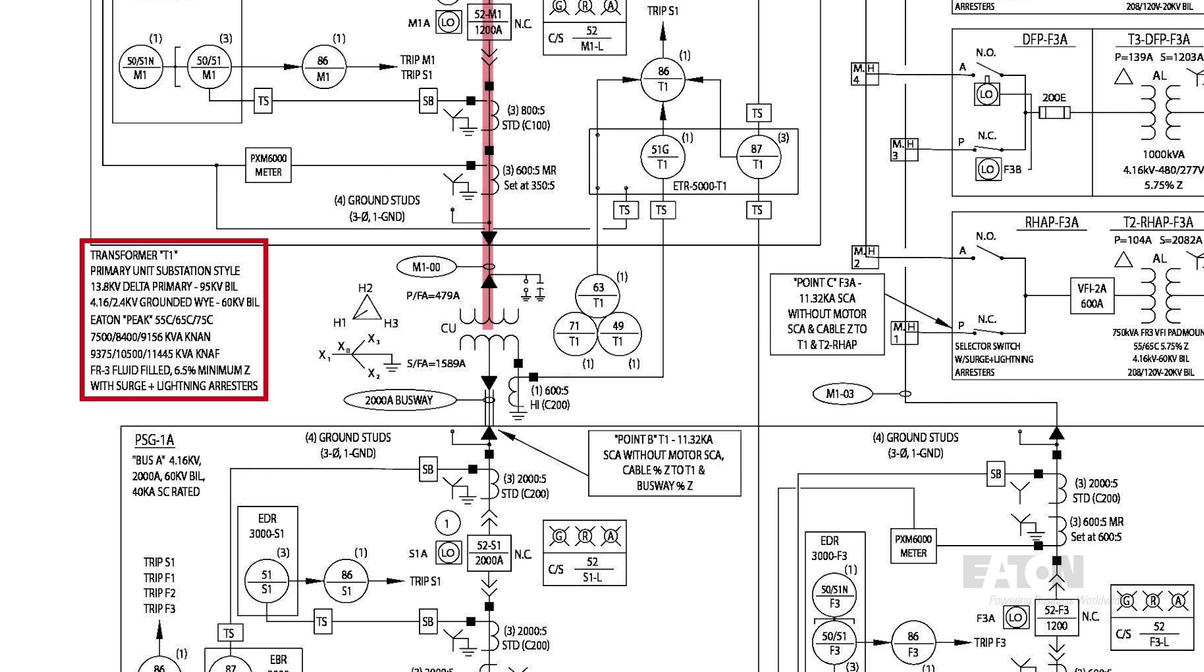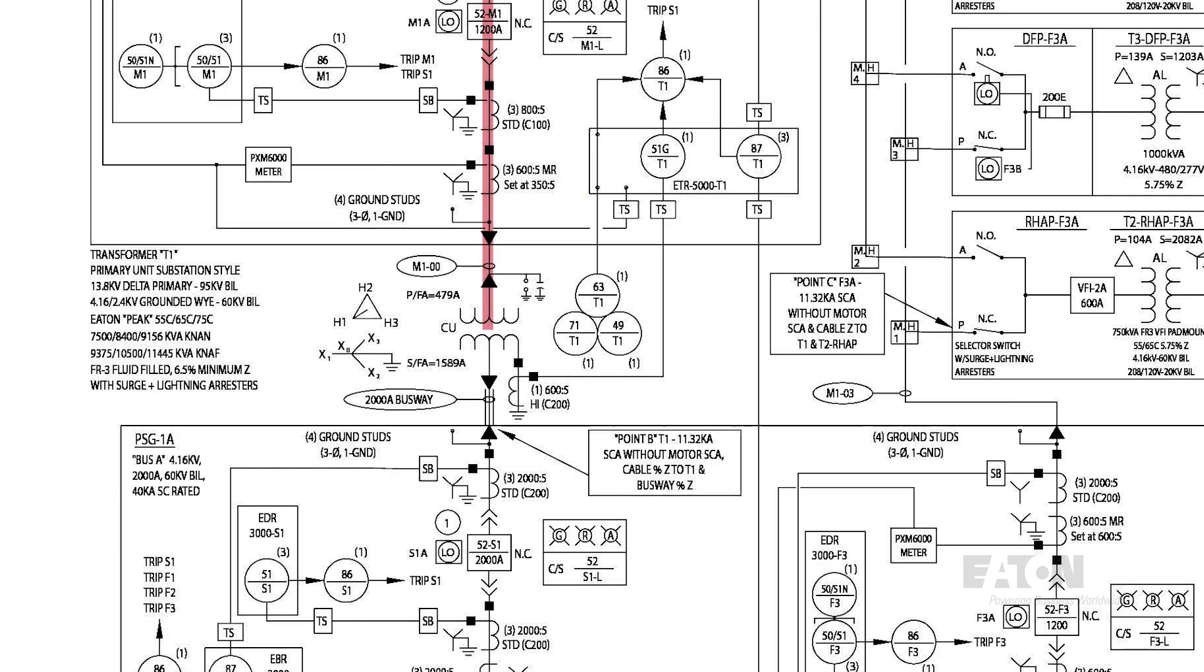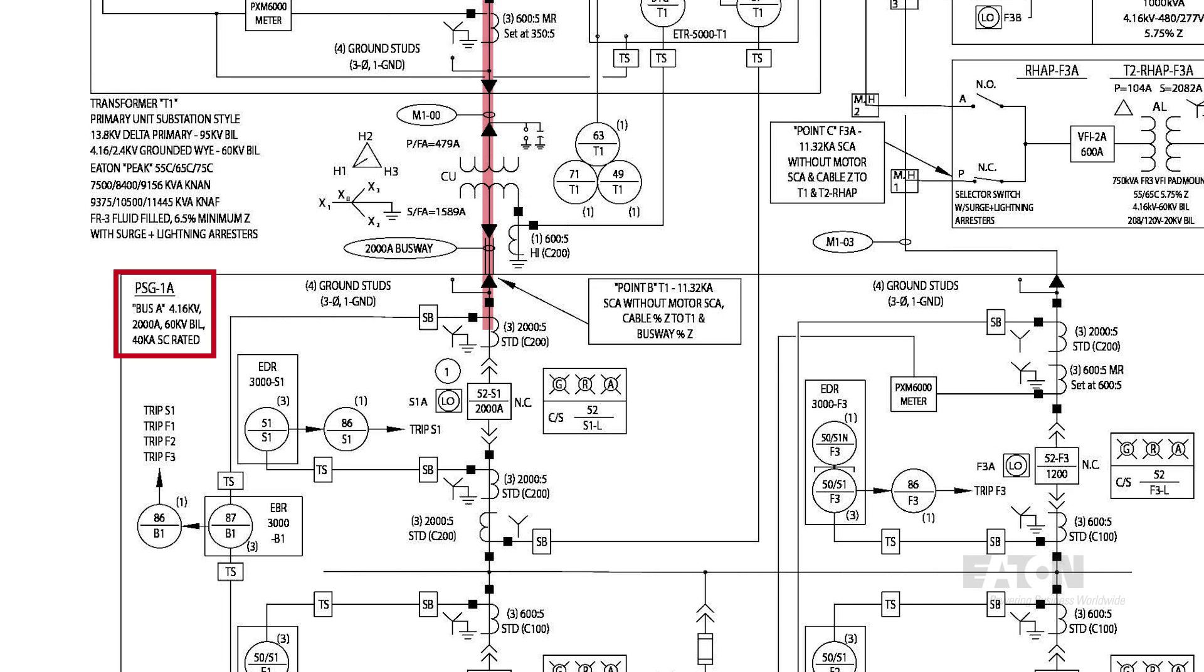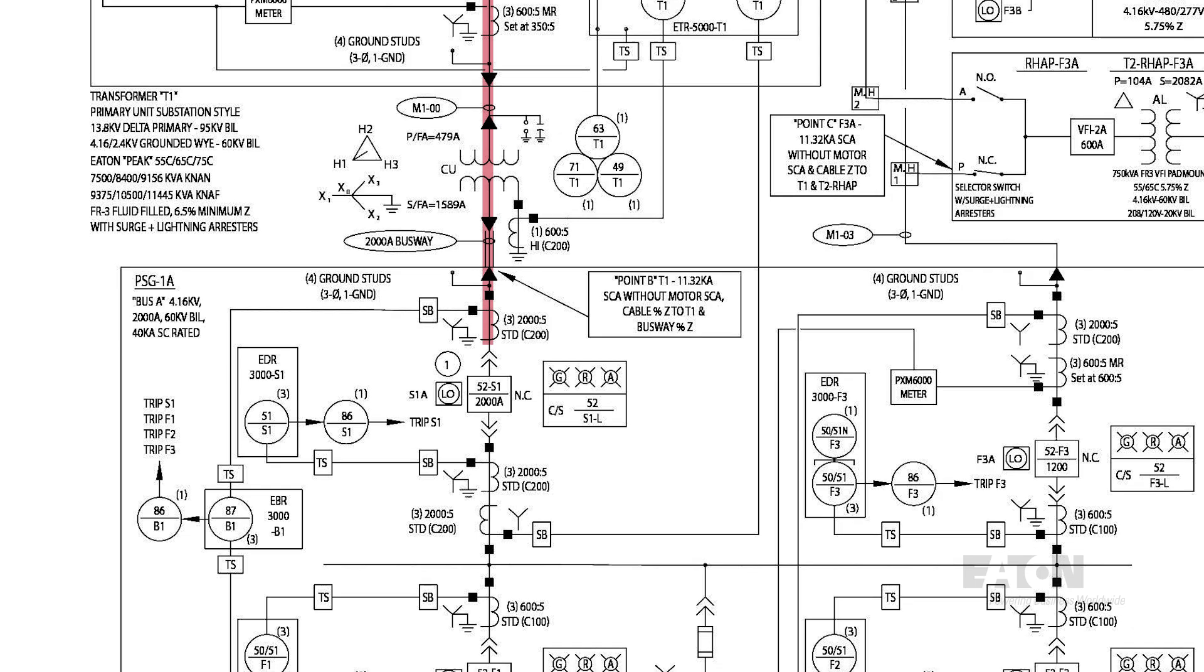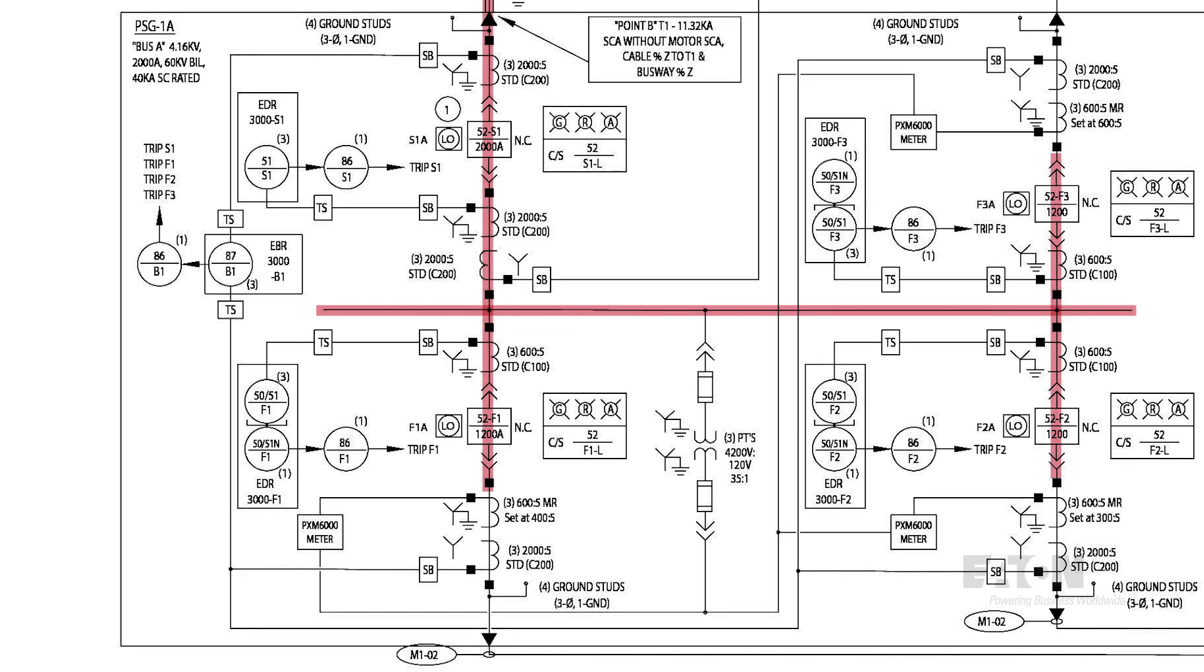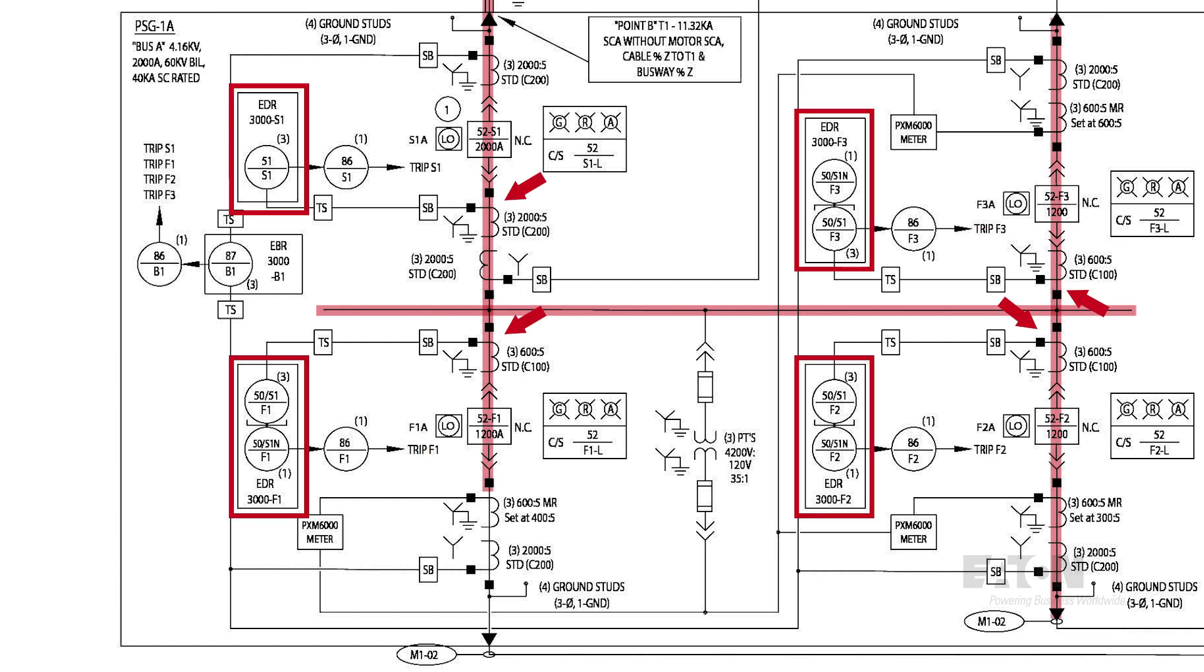Transformer T1 is 7500 kVA. It transforms the power from 13.8 kV to 4160 on the secondary side and is protected by an ETR5000 transformer protection relay via CTs on each side of the transformer. From the secondary side of transformer T1, the power flows into medium voltage switchgear lineup PSG-1A. This switchgear lineup is 4160 and has 2000 amp bus. You can see there are several different breakers in this lineup. It's larger than the 13.8 kV lineup upstream as it includes a main breaker labeled 52-S1 and three feeder breakers labeled 52-F1, F2, and F3.